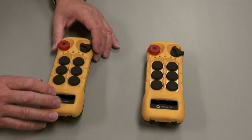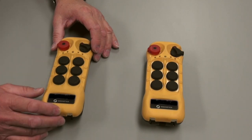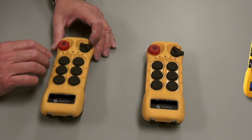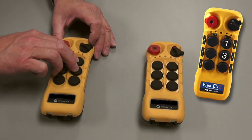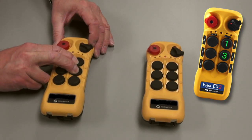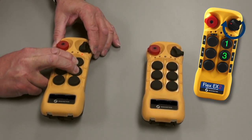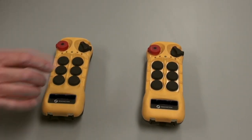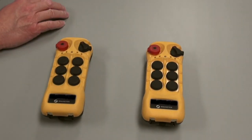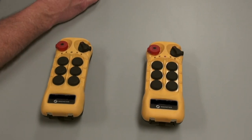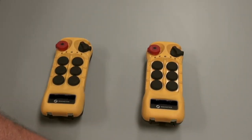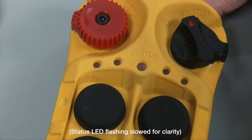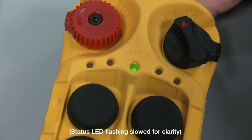The same steps are applied to the new transmitter. So buttons 1 and 3 are depressed, key switch is turned on. There's a sequence of flashing on the status LED, and what we're looking for is a series of red, green, and orange blinks.